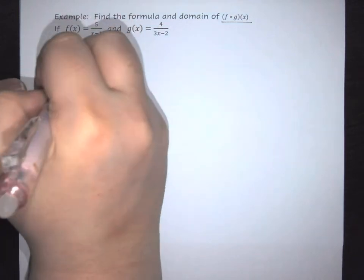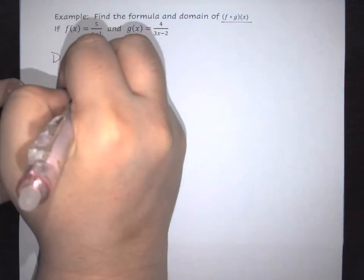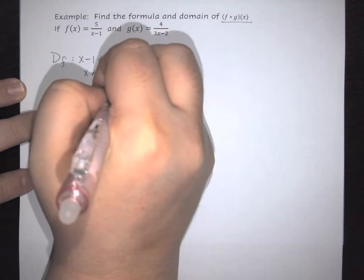What this means is that it has a domain where we're going to say negative infinity to 1 union 1 to positive infinity.